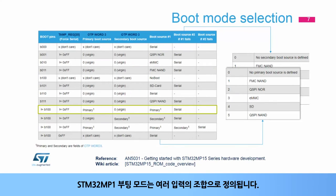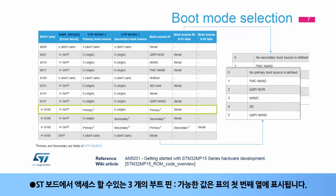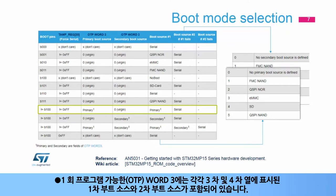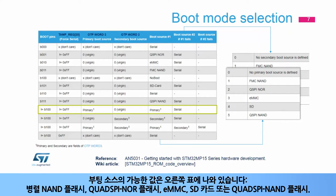The STM32MP1 boot mode is defined by the combination of several inputs: three boot pins accessible on ST boards, whose possible values are shown in the first column of the table. The next column corresponds to the TAMP backup register number 20, that allows the user to force a serial boot when it is set to 0xFF from U-Boot or Linux. And the one-time programmable Word 3 contains a primary boot source and a secondary boot source shown in the third and fourth columns respectively. The possible values for boot sources are listed in the tables on the right: parallel NAND flash,